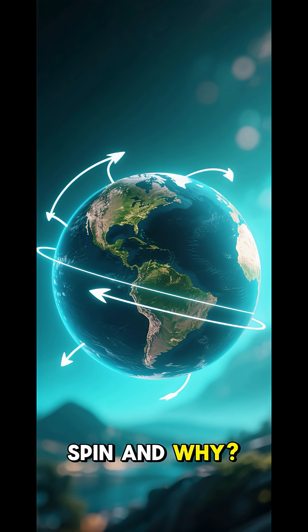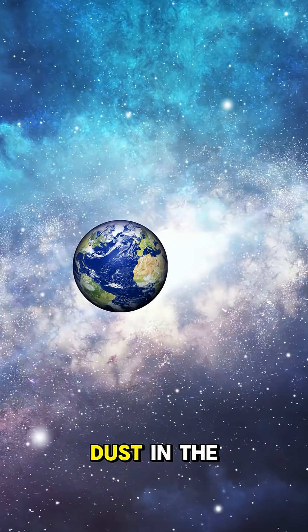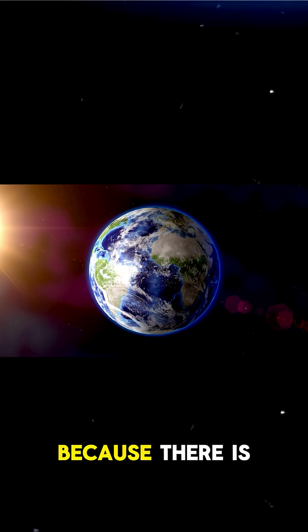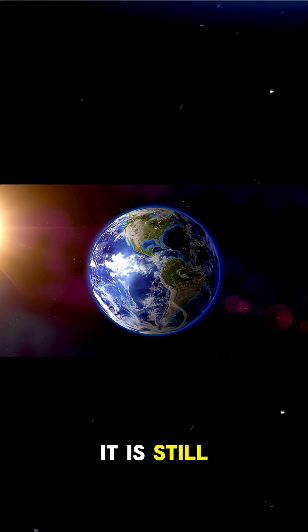Does the Earth spin and why? The Earth began to spin when it formed from swirling gas and dust in the solar nebula. Because there is almost nothing in space to slow it down, it is still spinning today.